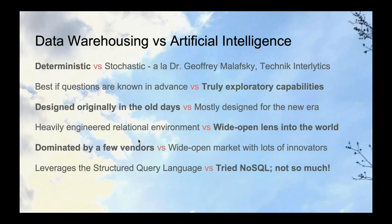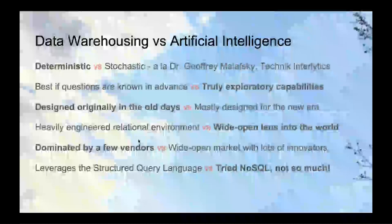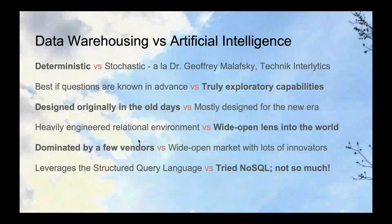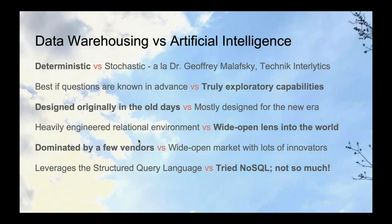Data warehousing was designed in the old days — and data access is a key topic. Thirty years ago we had slow processors, expensive storage, and thin pipes, so only big companies could do data warehousing. You had to be very lean about your data warehouse environment, think through how to model it, and who's going to get access. It's a heavily engineered relational environment. These days data warehouses are dominated by a handful of vendors.